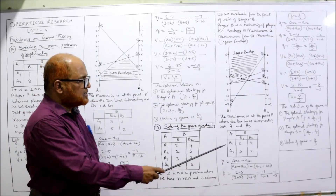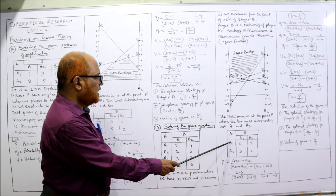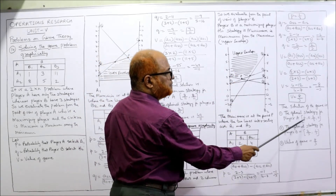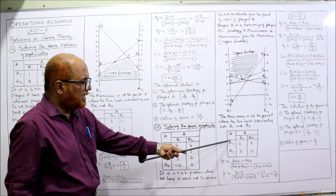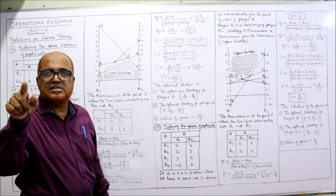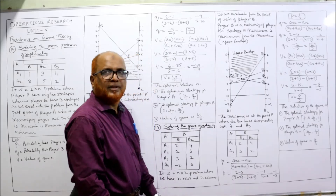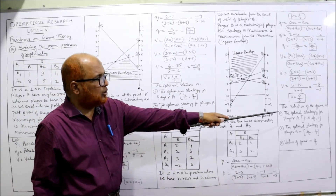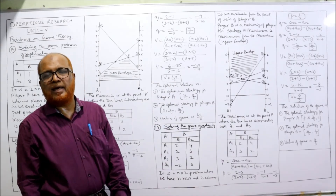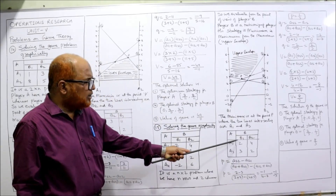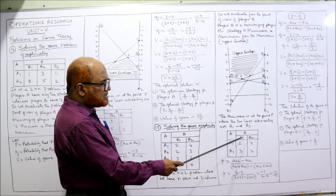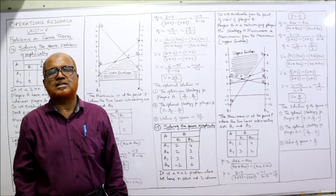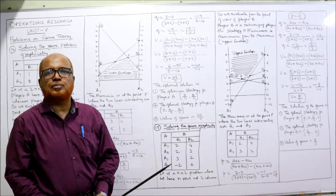The optimal strategy for player A: player A had four strategies, but only A1 and A3 were selected. Probability of A1 is p = 1/3, probability of A2 is 0, probability of A3 is 1 − 1/3 = 2/3, probability of A4 is 0. So the optimal strategy for A is (1/3, 0, 2/3, 0). For player B — two strategies — probability of selecting B1 is q = 2/3, and B2 is 1/3. The value of the game is 8/3.